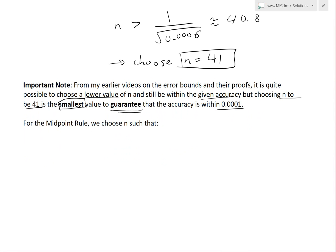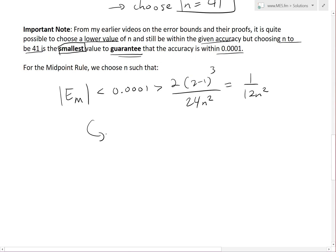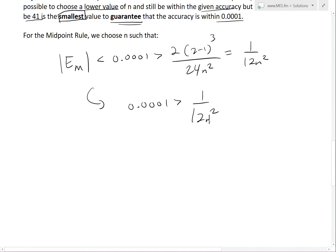For the midpoint rule, we choose n such that |E_M| < 0.0001, which means 0.0001 > k(b-a)³/(24n²) = 2(2-1)³/(24n²) = 1/(12n²). So 0.0001 ≥ 1/(12n²). Rearranging, n² > 1/(12×0.0001).